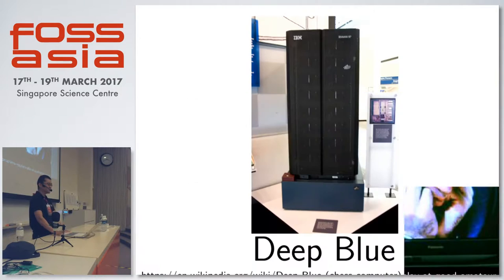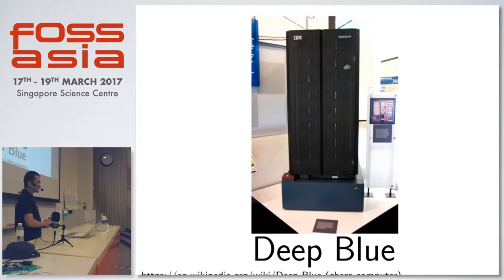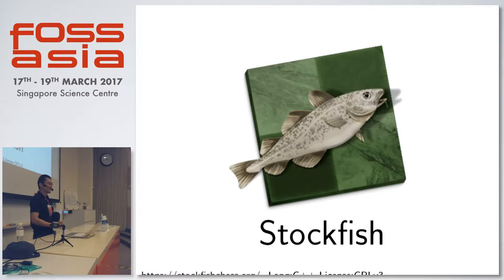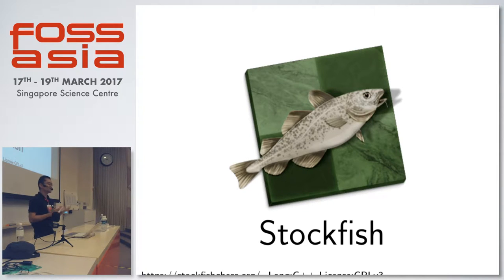Deep Blue is actually a massively distributed system with many nodes and specialized chips designed to play chess. Today, you can get a program from the internet called Stockfish that is much better than Deep Blue, even on your phone. It's an open-source C++ project licensed under GPLv3. Stockfish is the highest-ranked chess program, with an ELO rating of over 3,300 — human grandmasters are around 2,800.